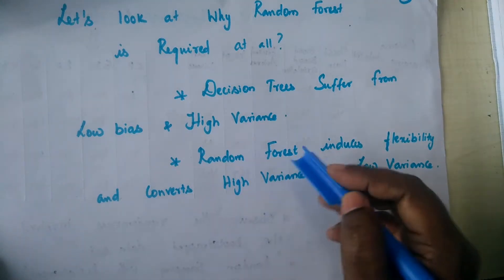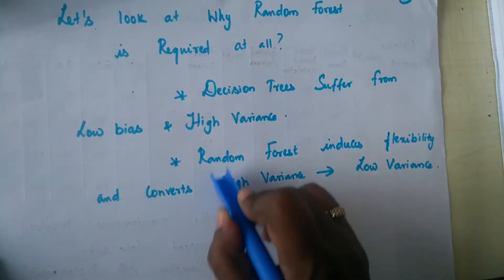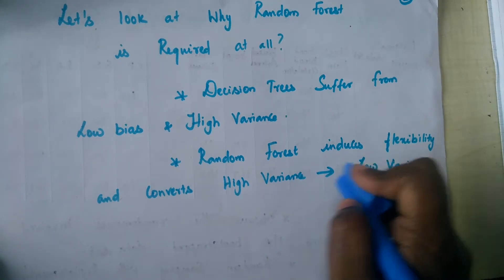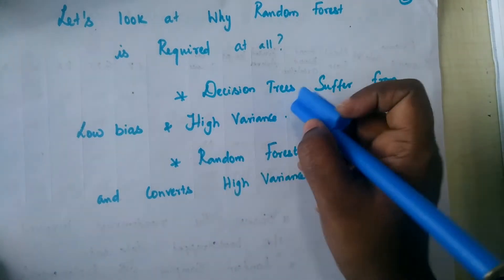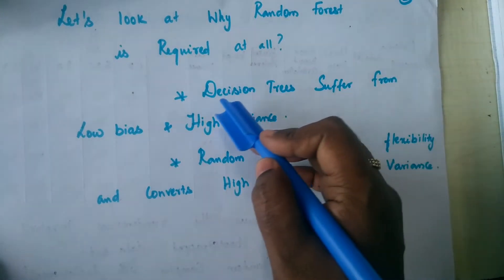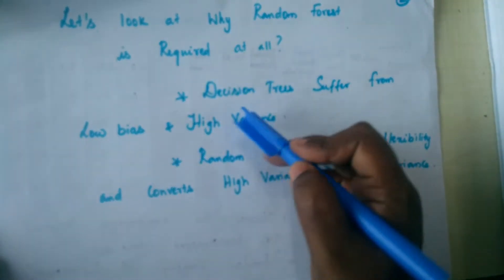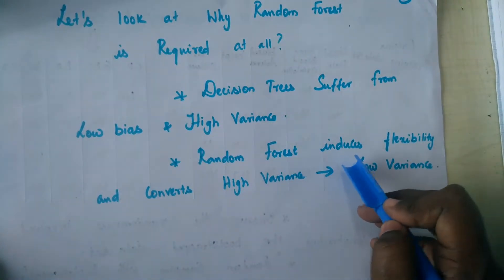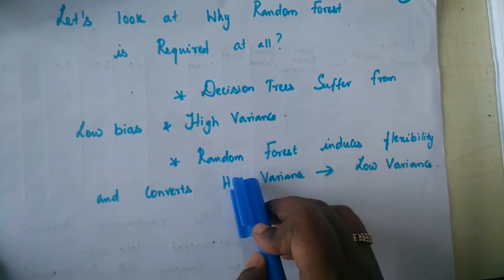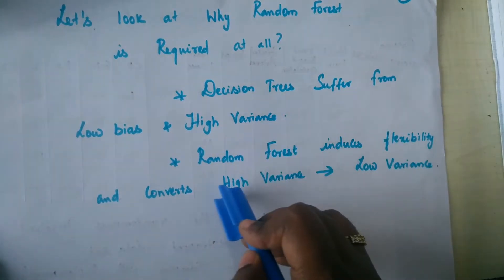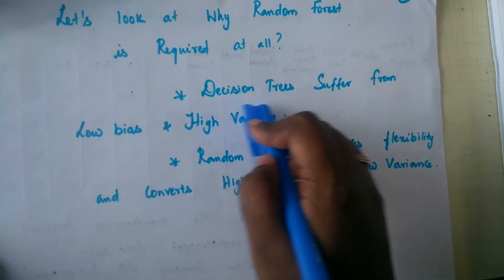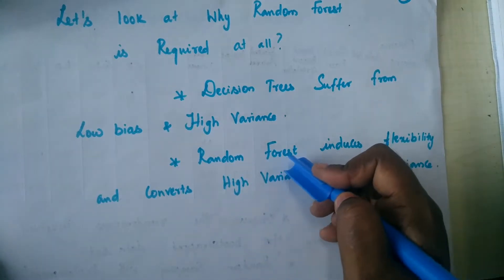Random forest introduces some flexibility and converts this high variance factor into a low variance one. That's why random forest is opted over the decision tree. A classification or regression problem done with a decision tree depends on a single tree, whereas random forest relies on many trees, which introduces flexibility and randomness. That means the decision tree is an overfitted one, whereas the random forest is not.